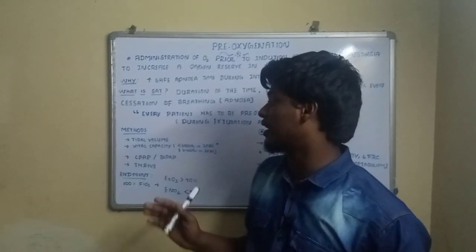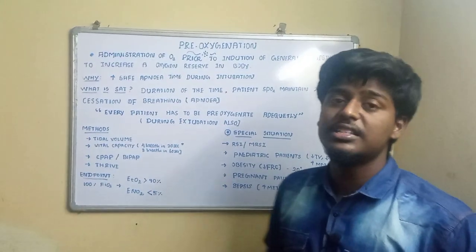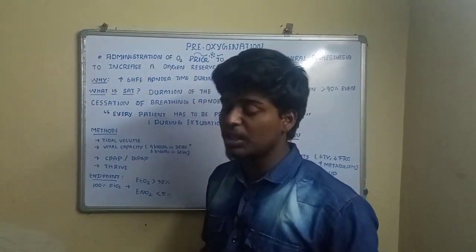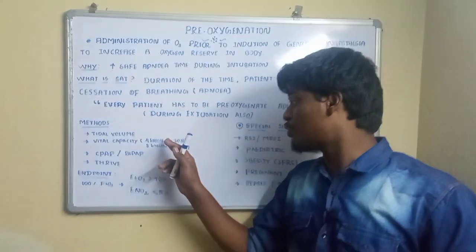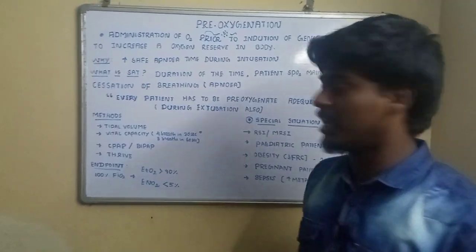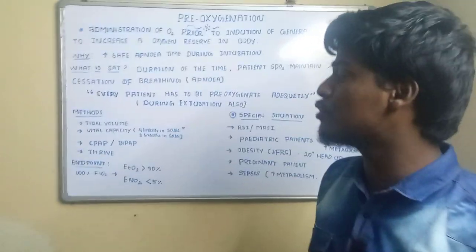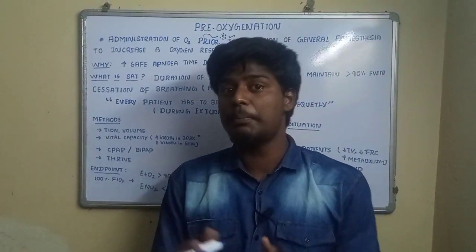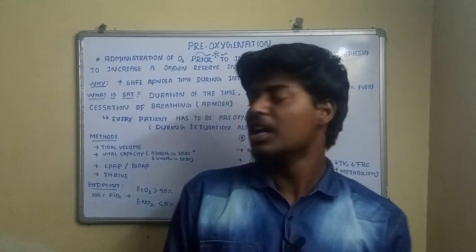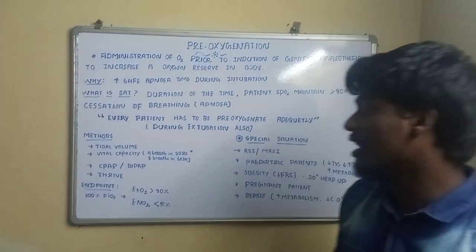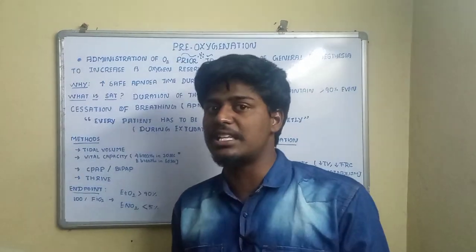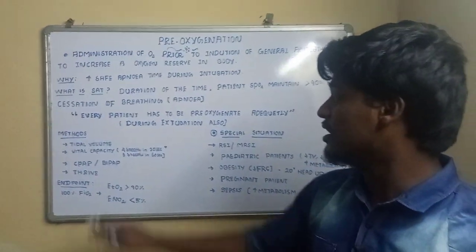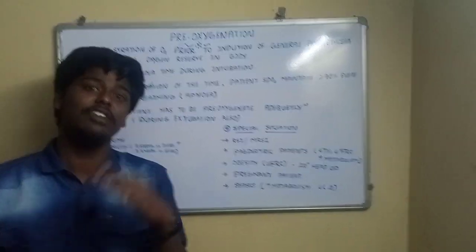There are four methods used to pre-oxygenate patients correctly. The first is tidal volume breathing — replacing oxygen through tidal volume breaths. The second is vital capacity breathing, which has two sub-methods: four breaths in 30 seconds, and eight breaths in 60 seconds. The most commonly used method is four breaths in 30 seconds. The third method is CPAP or BiPAP — continuous positive airway pressure or bi-level positive airway pressure. The fourth is THRIVE, which stands for transnasal humidified insufflation of ventilatory exchange, also known as jet ventilation.